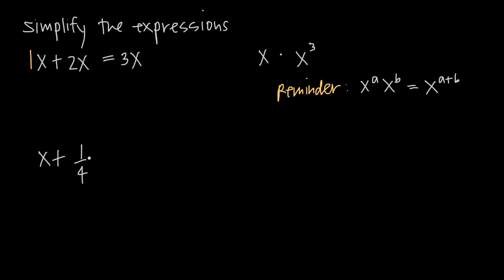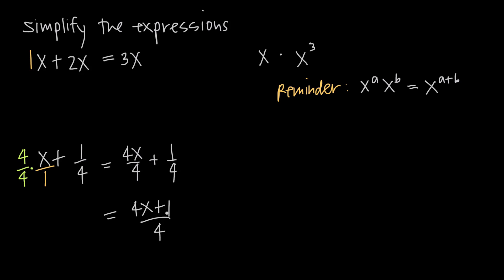In this example we have x plus the fraction 1 fourth. We have to remember that we have this understood 1 here — this is really x divided by 1, not just x. When we do that, it's helpful because now we can find a common denominator with our second fraction. We look at the larger denominator, which is 4, so we multiply our first fraction by 4 over 4. That gives us 4x over 4 plus 1 over 4, and when we add those fractions with the same denominator, we get 4x plus 1 over 4 as our final answer.